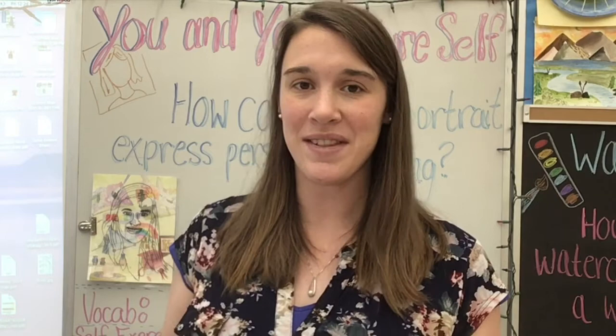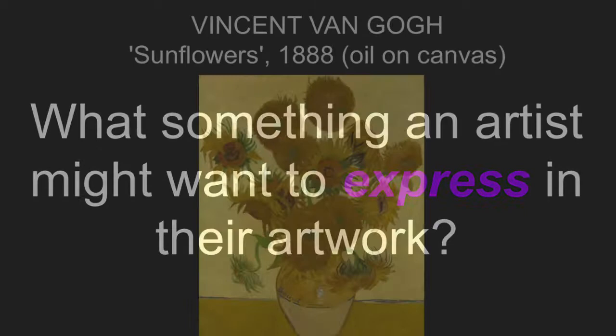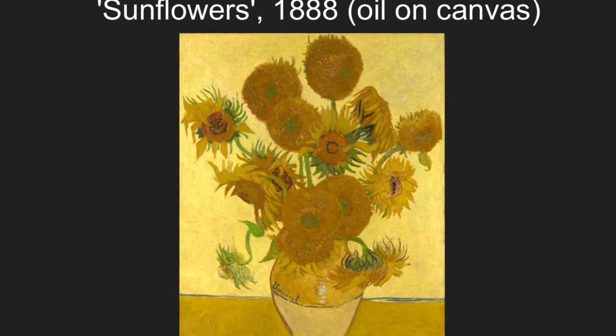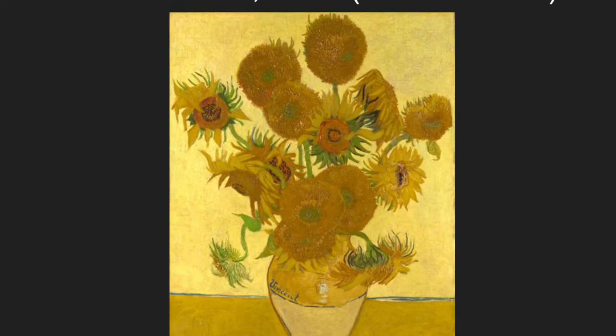The question we're trying to answer is: what is something an artist might want to express in their artwork? Here's an artwork by Vincent Van Gogh titled Sunflowers. If you were looking at just the colors — the yellows, the oranges, the lime greens — how does it make you feel? Go ahead, throw your answer out there. Happy? Joyful? Excited? I would agree.